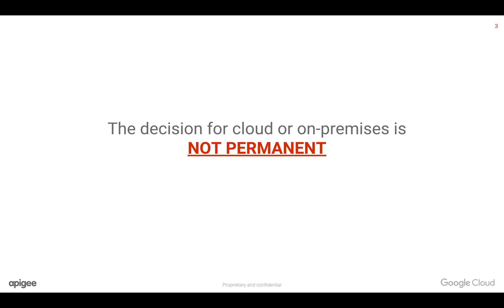Whatever decision you take to use Apigee Edge Cloud or on-premises, it's not permanent. You can move the assets from on-premises to cloud or cloud to on-premises relatively easily in Apigee Edge, because Apigee Edge fundamentally provides management APIs and both cloud and on-premises are built on the same software and same architecture. You can move your APIs between environments easily.